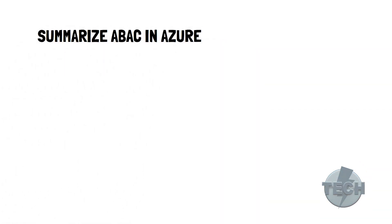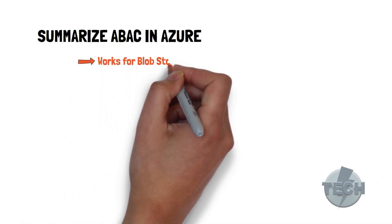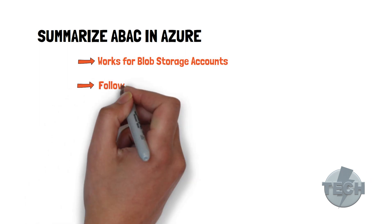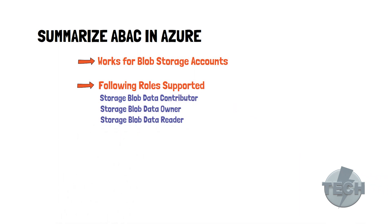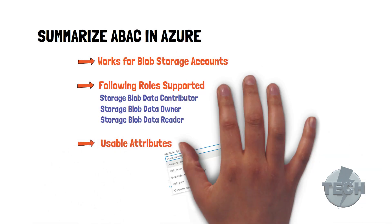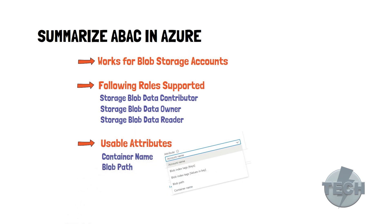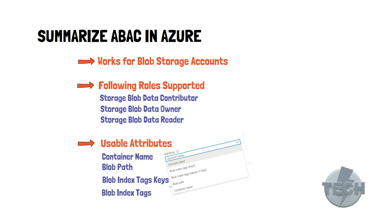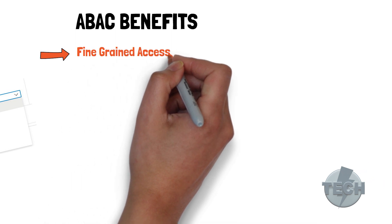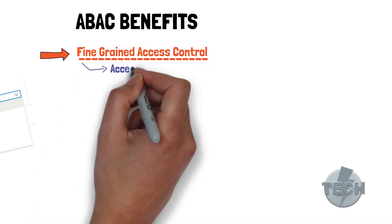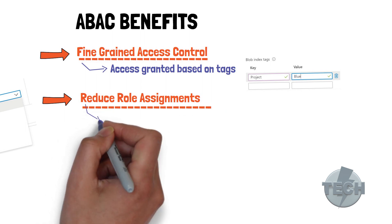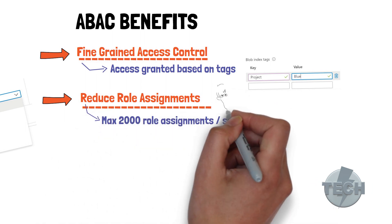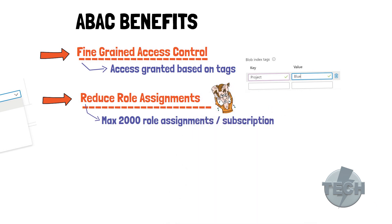Let's summarize our learning experience. ABAC currently only works for Azure Blob storage accounts. You can use it with the following built-in roles: Storage Blob Data Contributor, Storage Blob Data Owner, and Storage Blob Data Reader. These are the storage attributes you can use in your condition: container name, blob path, blob index tags keys, and blob index tags. Some of the benefits of ABAC: it provides more fine-grained access control. You can grant a user access to only a specific set of files with certain tags. It also helps to reduce the number of role assignments — each Azure subscription supports a maximum of 2000 role assignments, and certain scenarios may force you towards this limit. This can be mitigated and solved by ABAC.